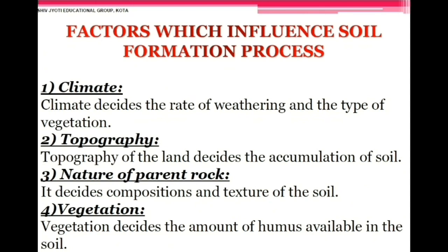Factors which influence the soil formation process are: climate, topography, nature of parent rock, and vegetation. Climate decides the rate of weathering and the type of vegetation. Topography decides the accumulation of soil. The nature of the parent rock decides the composition and texture of the soil. Vegetation decides the amount of humus available in the soil.